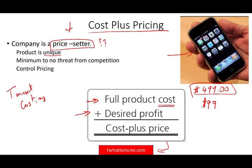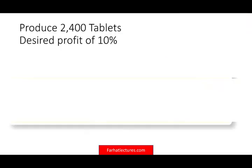Under these circumstances, what you do is determine your full product costs, and then add to it some desired profit. For example, you might add 10% of your cost, 20% of your cost, or 30% on your average assets — whatever you want to do. To illustrate this point, let's work an example.